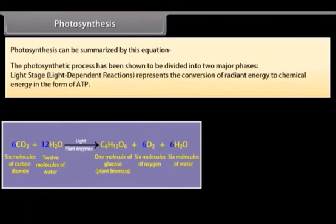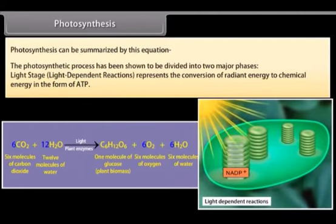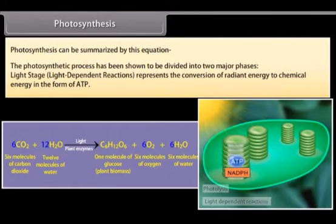The photosynthetic process has been shown to be divided into two major phases. Light stage: light-dependent reactions represent the conversion of radiant energy to chemical energy in the form of ATP.